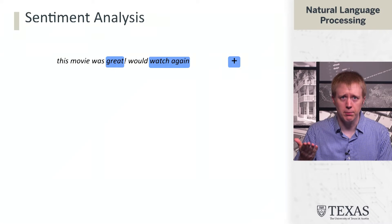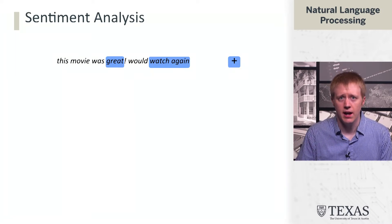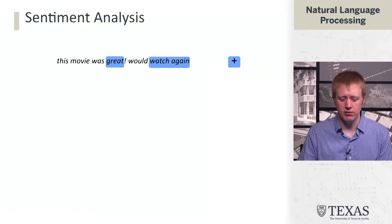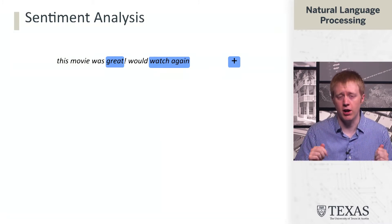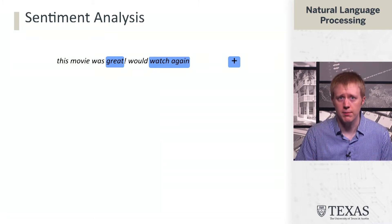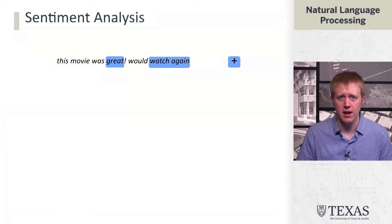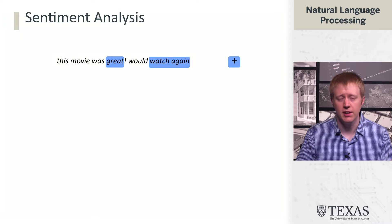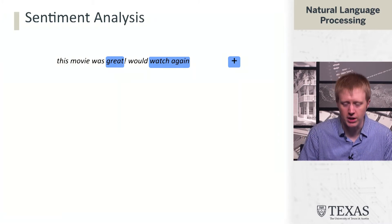We've looked at examples like 'The movie was great, would watch again.' Having bag-of-words features on unigrams or single words lets you capture things like 'great' being positive sentiment, and bigrams or pairs of words in our feature space allow us to capture pairs like 'watch again.'